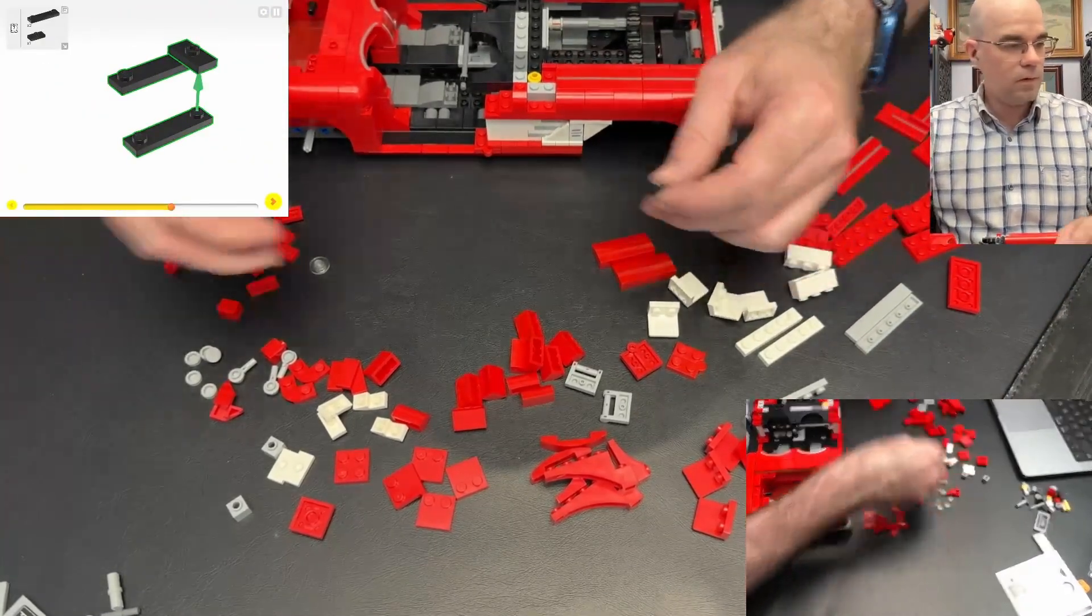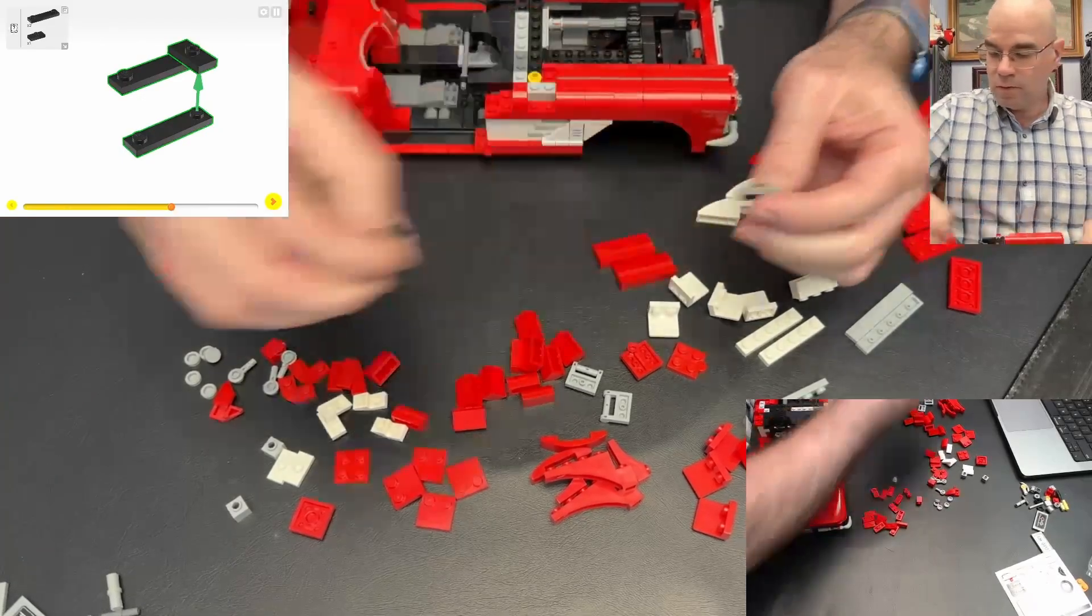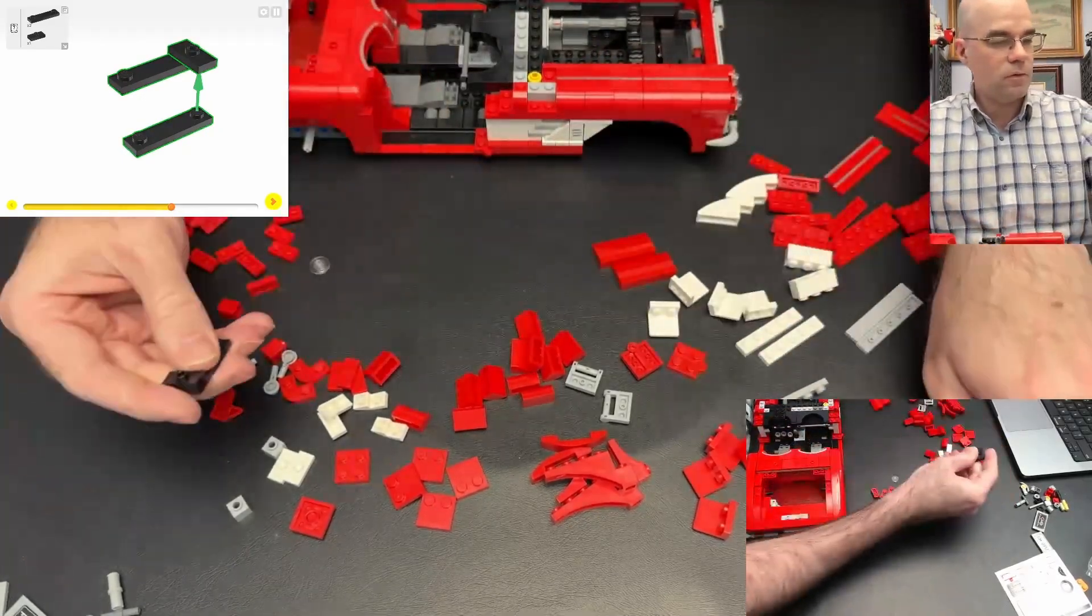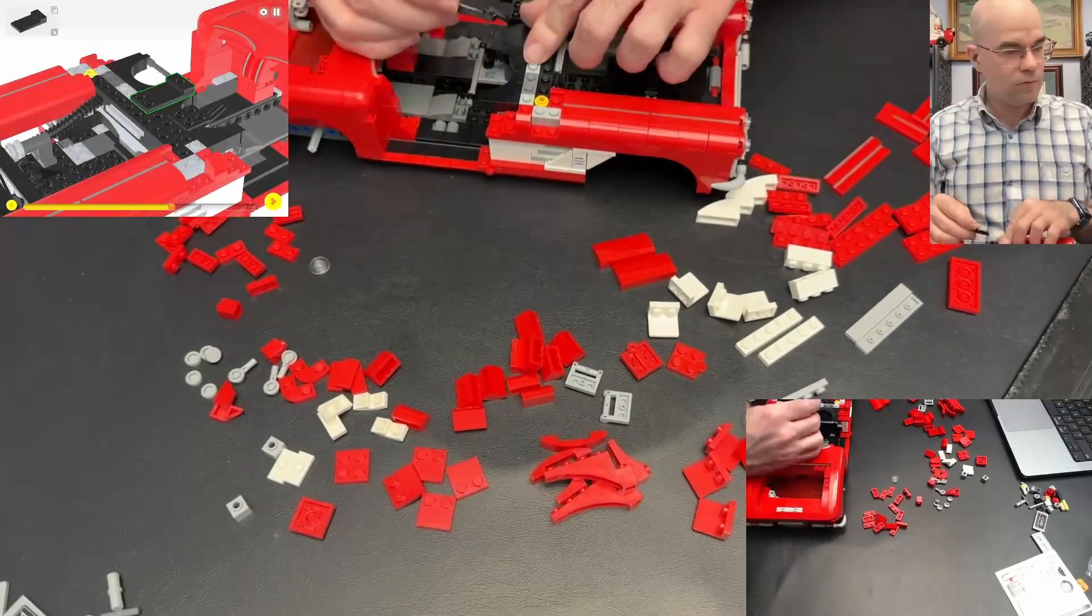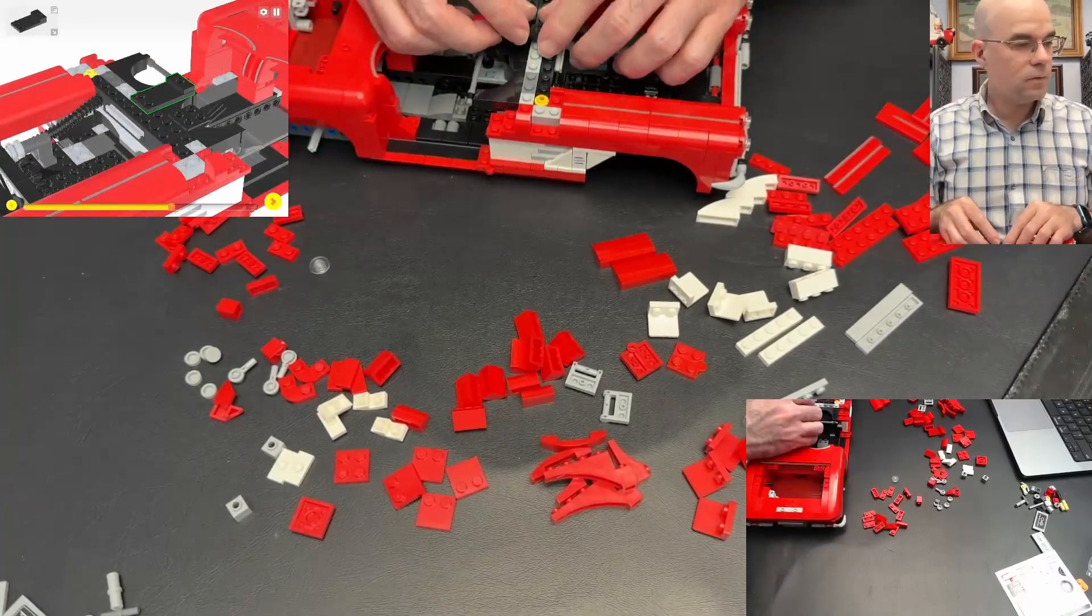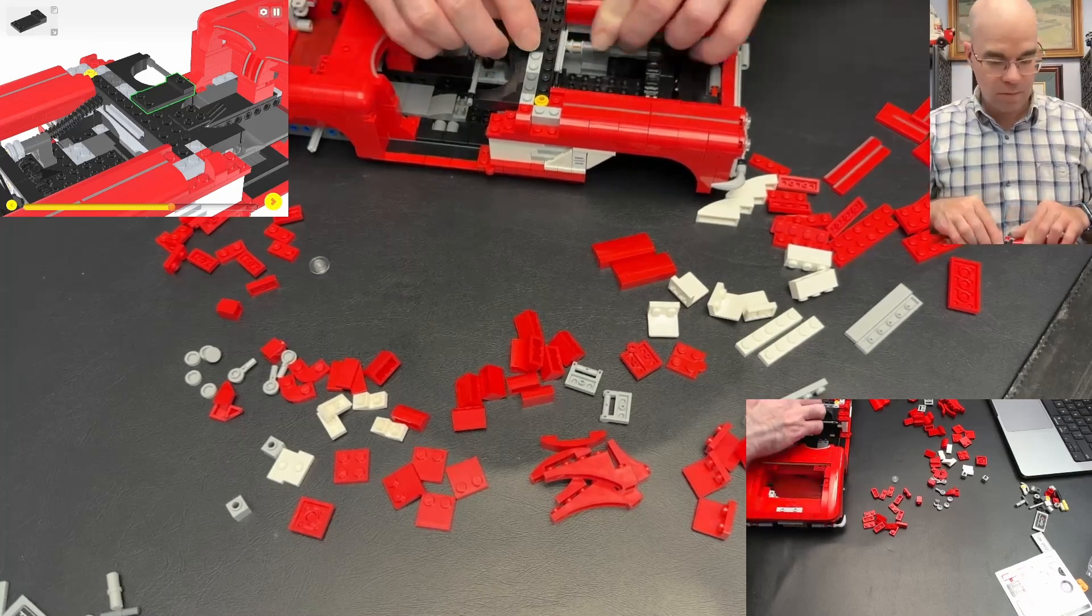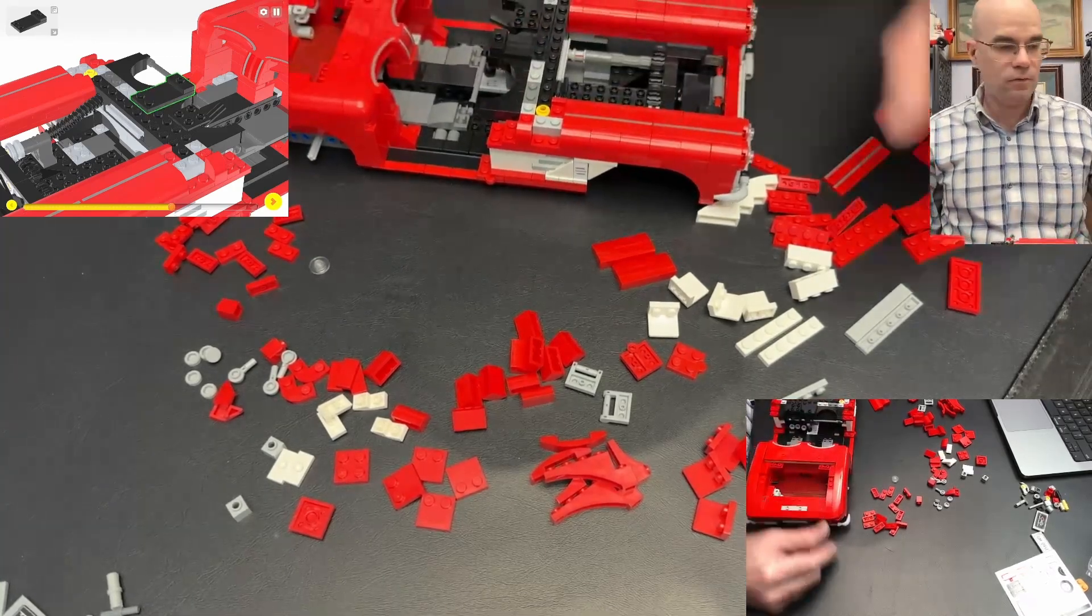Okay, now what do we got here? We're going to take this jumper, hook these two modified plates together, and that's going to sit on top here. That's interesting.